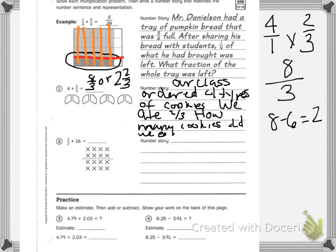For number 2, you have one half times sixteen. You need to solve and give a number story. Down at the bottom, the practice says: make an estimate, then add or subtract. Show your work on the back of this page — I'm highlighting that. Show your work on the back of this page, since we usually have work on the back. So first estimate, then solve.